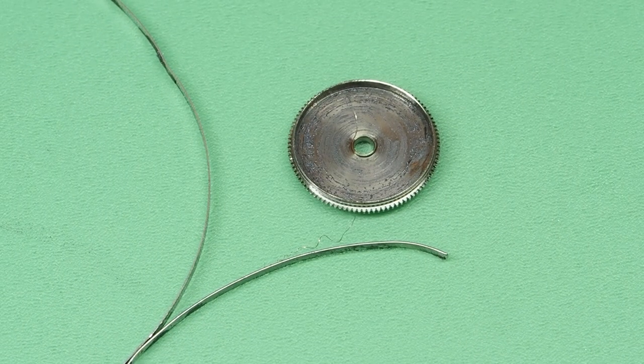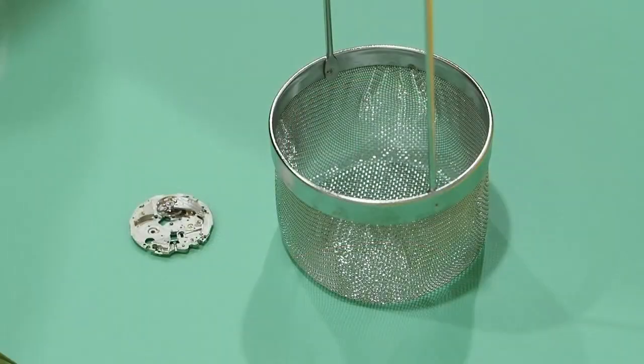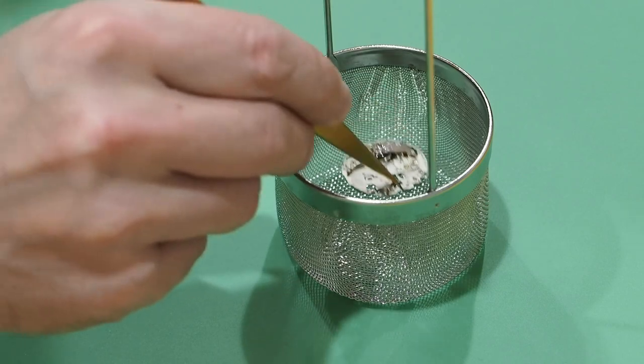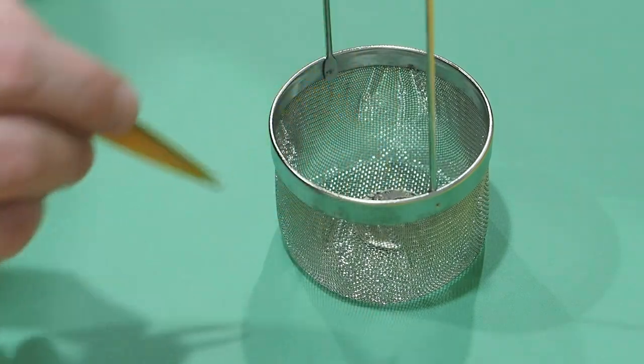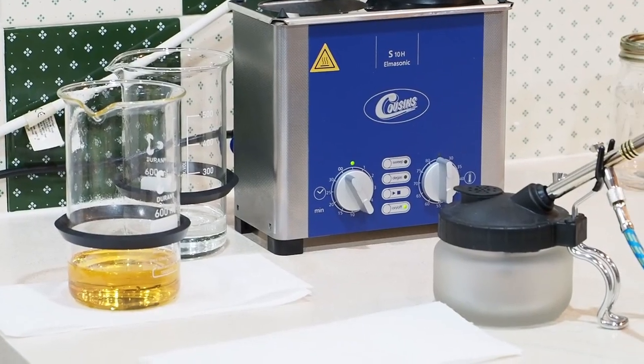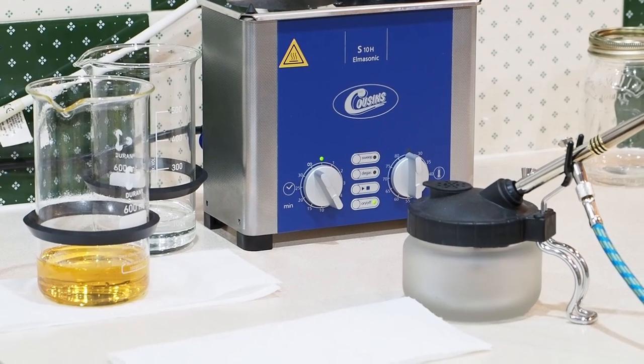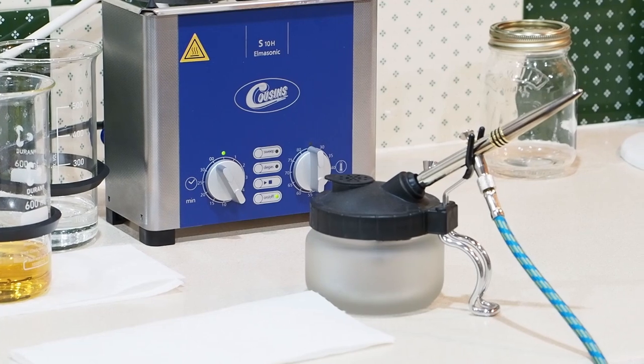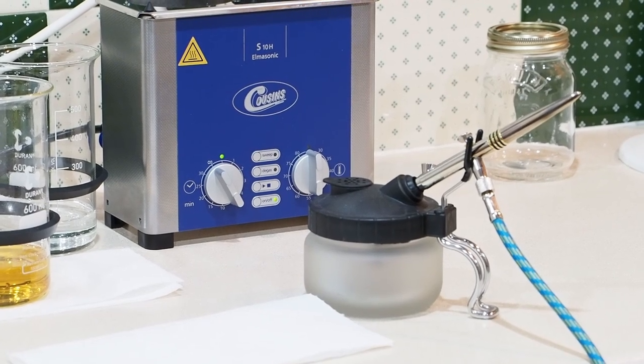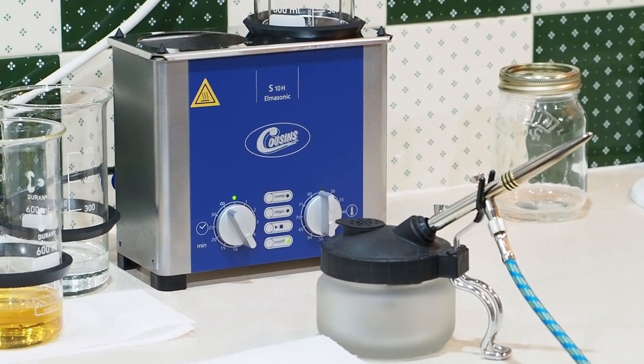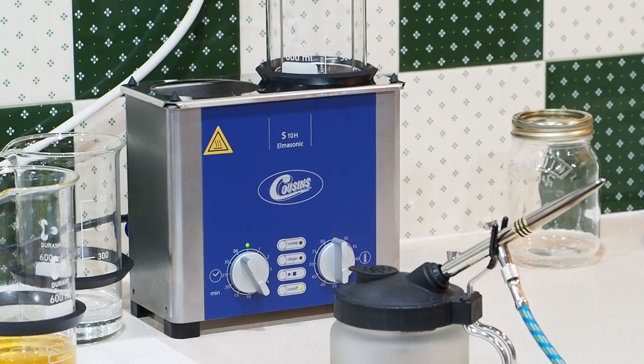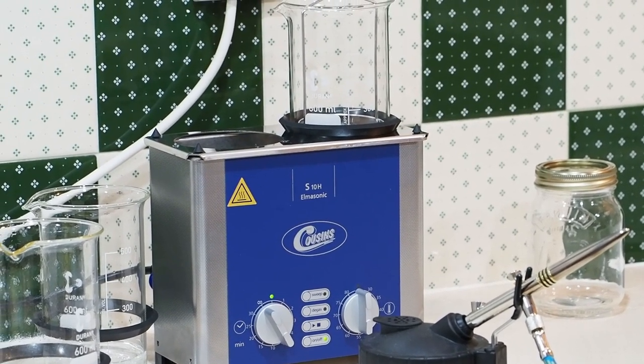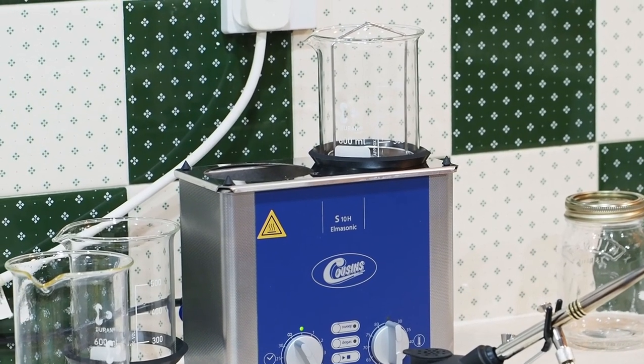That's the barrel disassembled now, and now I can clean all the parts. Currently I'm using the Elma S10H which does a brilliant job, and yes there is an airbrush there what you can see, I use it instead of a blower when I'm cleaning parts because it's much quicker than using a blower. I hope you enjoyed the video and if you did give it thumbs up and watch part 2, the assembly.